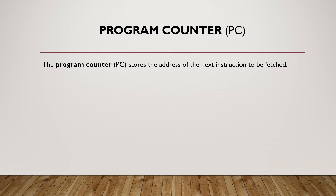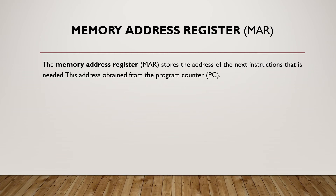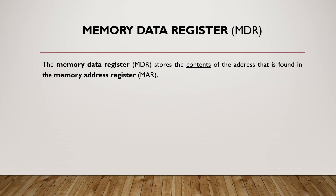The Program Counter is used to store the address of the next instruction to be fetched. The Memory Address Register stores the address of the next instruction that is needed; this address is obtained from the Program Counter. The Memory Data Register stores the contents of the address found in the Memory Address Register — so whatever address we have in the MAR is stored in the MDR.